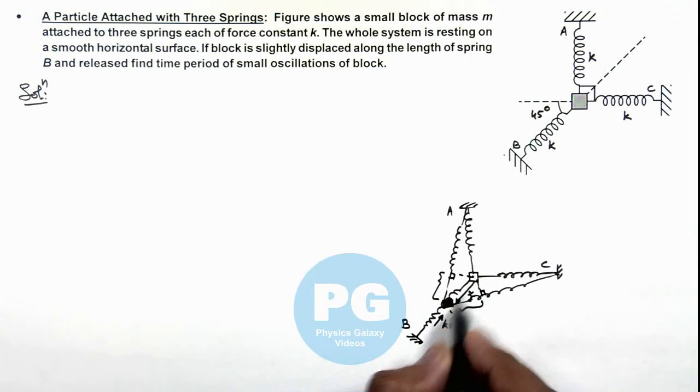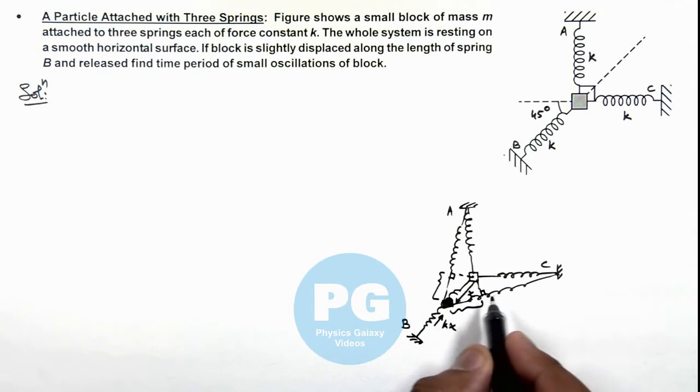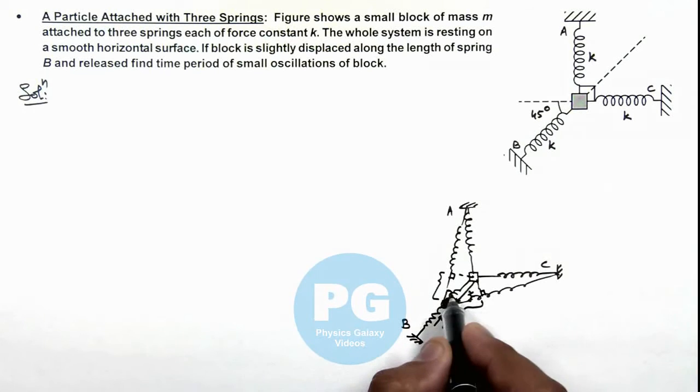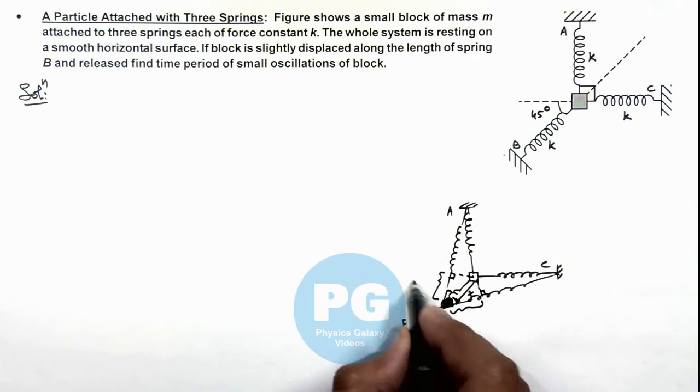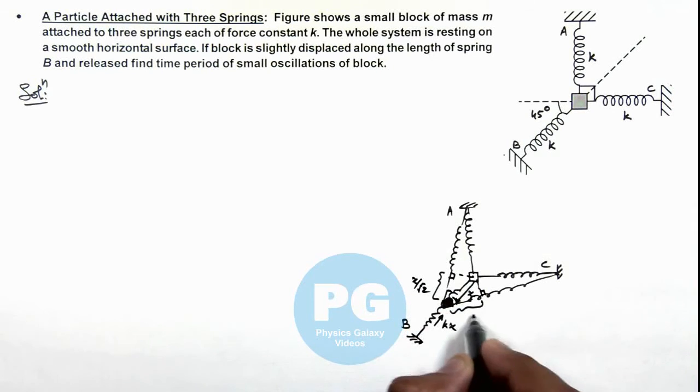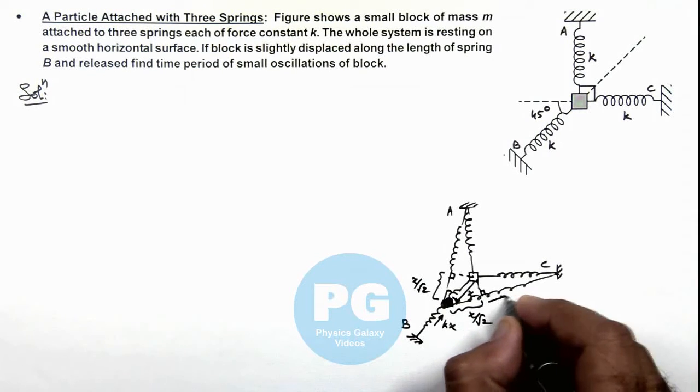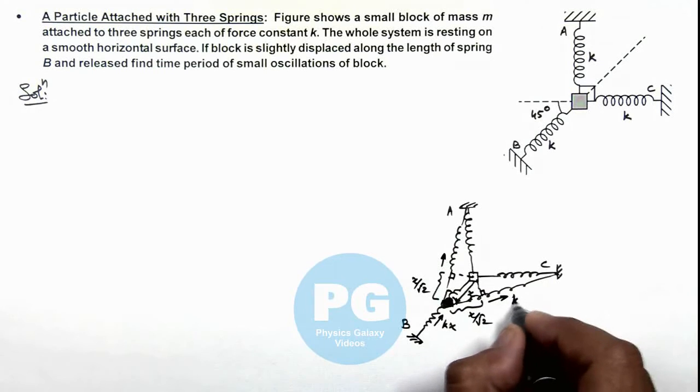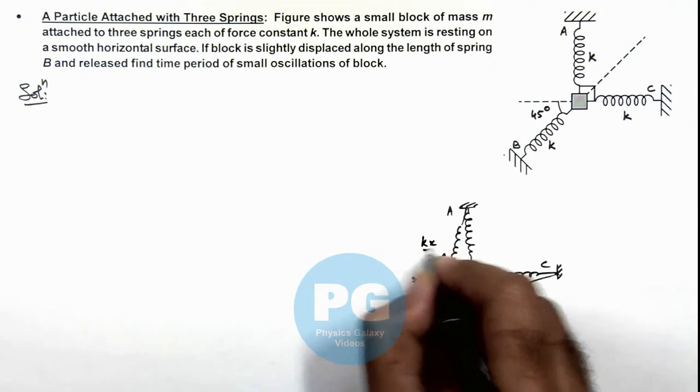We already know this angle is 45 degrees. As x is very small, we can neglect the small variation in angle. So if this distance is x, this will be x/√2 and this will also be x/√2. These springs will exert forces of kx/√2 and kx/√2 on the block.